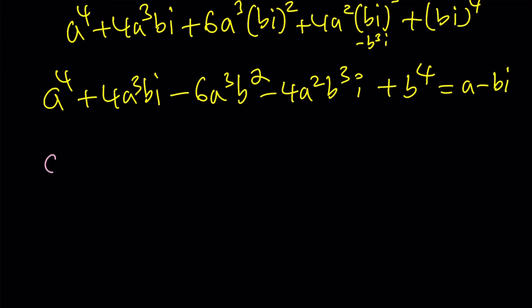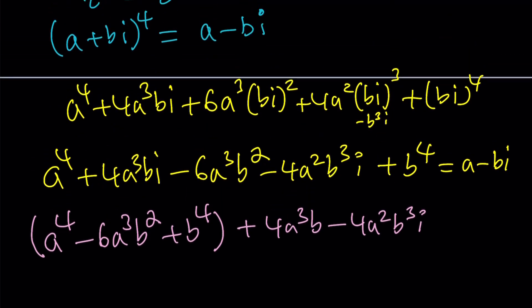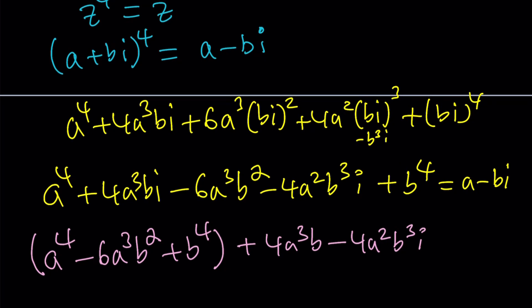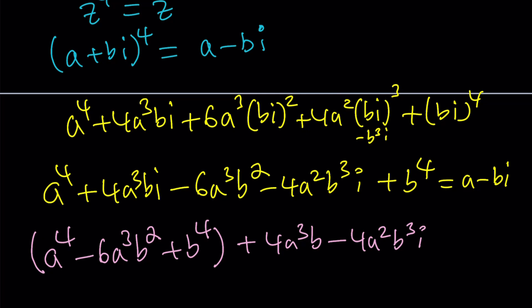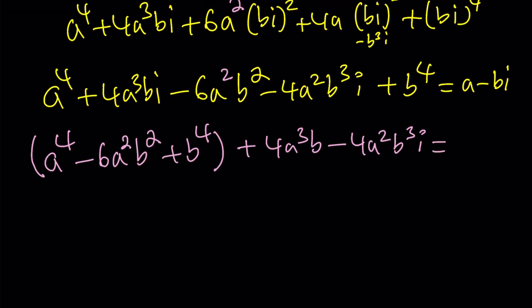Well first of all A to the fourth, 4A cubed B I is just going to stay the same and now B I quantity squared. That's going to be B squared I squared which is negative B squared. It's going to be negative 6A squared B squared. Notice that this is going to be real. And B I cubed B cubed I cubed. That's going to be negative B cubed I. So negative 4A B cubed I. And finally I to the fourth is 1. So this is going to give me B to the fourth. And this is equal to A minus B I.